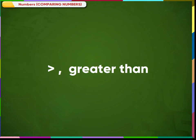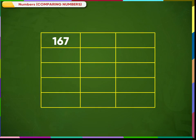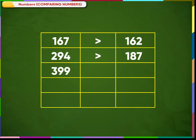We know that we use the greater than symbol for comparing numbers. For example, 167 is greater than 62. 294 is greater than 187. 399 is greater than 389. 551 is greater than 420.